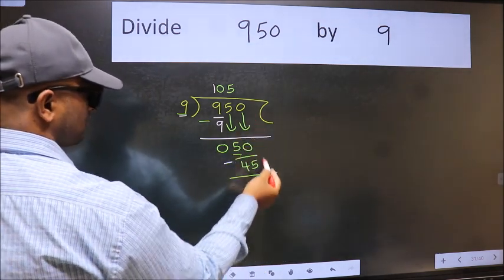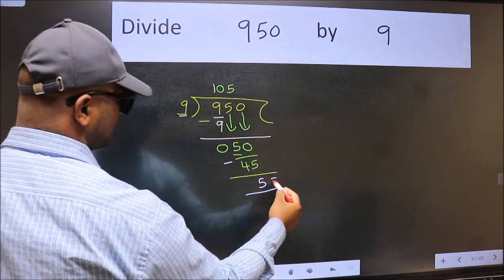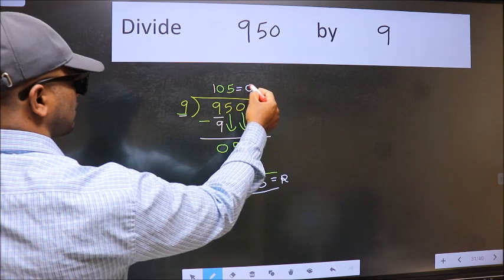No more numbers to bring down. So we stop here. This is our remainder and this is our quotient.